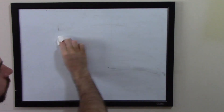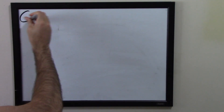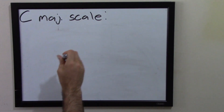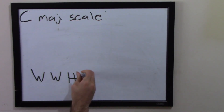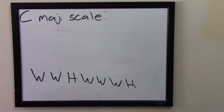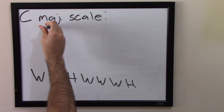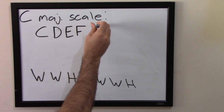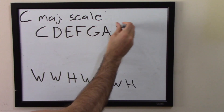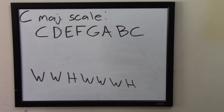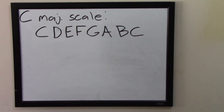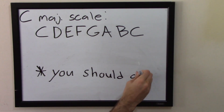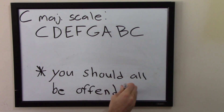Let's start with a C major scale. What is a C major scale? Well, you start at C and go up whole step, whole step, half step, whole step, whole step, whole step, half step. That gives you C, D, E, F, G, A, B, C. But of course we know all this already. I am insulting your intelligence by even explaining this, because of course you know what that is.